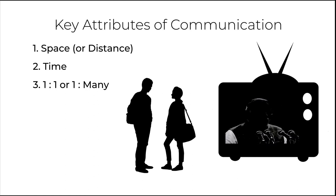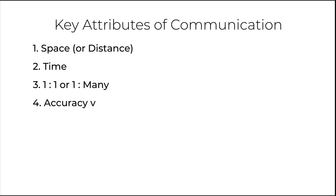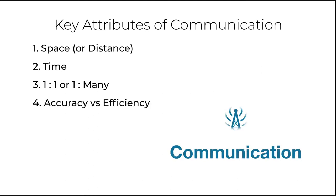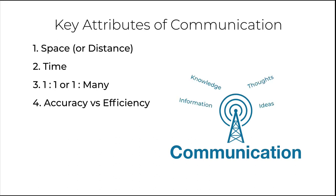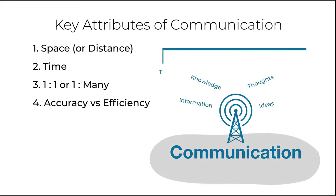Another aspect of communication is accuracy versus efficiency. Communication is essentially dissemination of information, knowledge, ideas and thoughts across time and space, which means information needs to be disseminated, stored and preserved while maintaining its accuracy.